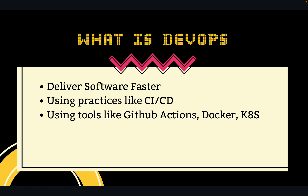We'll start with DevOps. In very simple terms, DevOps helps you to deliver software faster. You may have seen in your company that it uses practices like CI/CD, which is continuous integration and delivery, using various tools like GitHub Actions, Docker, and Kubernetes. These tools and practices help you to release software faster — not weekly or monthly, but whenever you need and frequently — and that too as high-quality software.